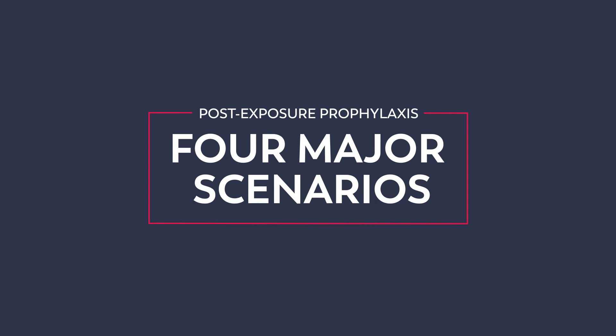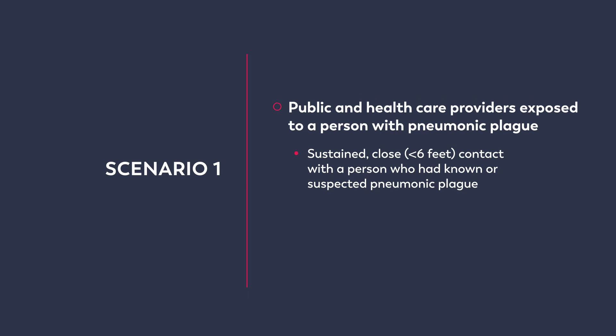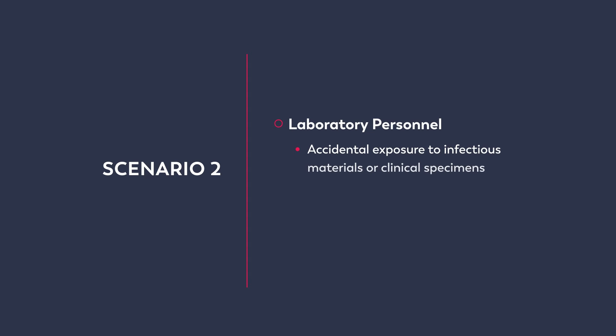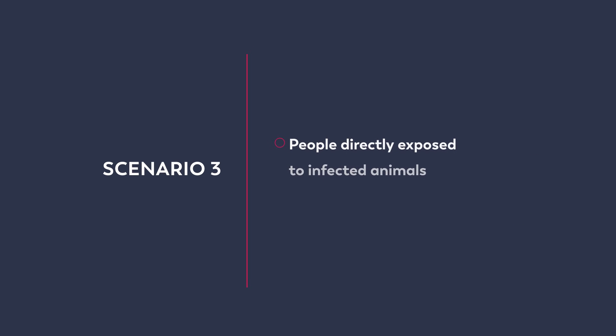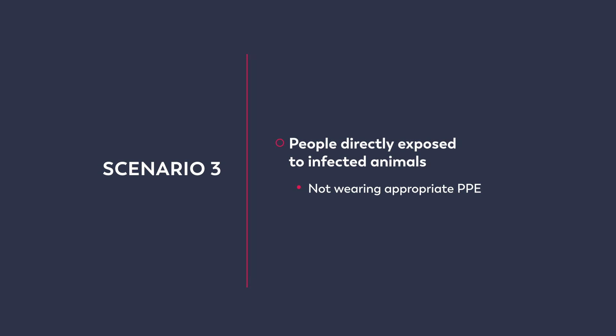Post-exposure prophylaxis, or PEP, is warranted in four major scenarios. In the first scenario, people who have sustained close contact with a person who had known or suspected pneumonic plague and were not wearing appropriate personal protective equipment should receive post-exposure prophylaxis. This applies to any close contact, including healthcare personnel. The second scenario involves laboratory personnel exposed to infectious materials or potentially infectious clinical specimens while not wearing appropriate PPE. The third scenario applies to a person who had direct contact with infected animals, including animals who died of plague or any carcass in a mass die-off scenario in a plague-endemic area.